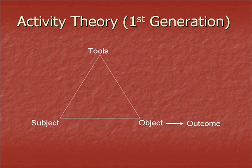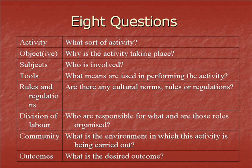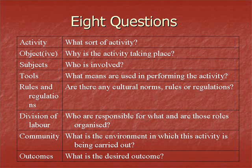First generation activity theory represents activity at an individual level. It is based on the assumption that tools mediate between the subject and the object. These tools, such as physical tools, language and symbols, are created and or transformed in the course of the activity. Second generation activity theory represents activity at a collective level. Rules may be explicit or implicit. Division of labour refers to the explicit and implicit organisation of the community involved in activity. Based on the elements of generation two activity theory, Mwanza and Engerstrom list eight questions that need to be addressed when investigating a system, which provide an opportunity to identify tensions and contradictions within a single activity.